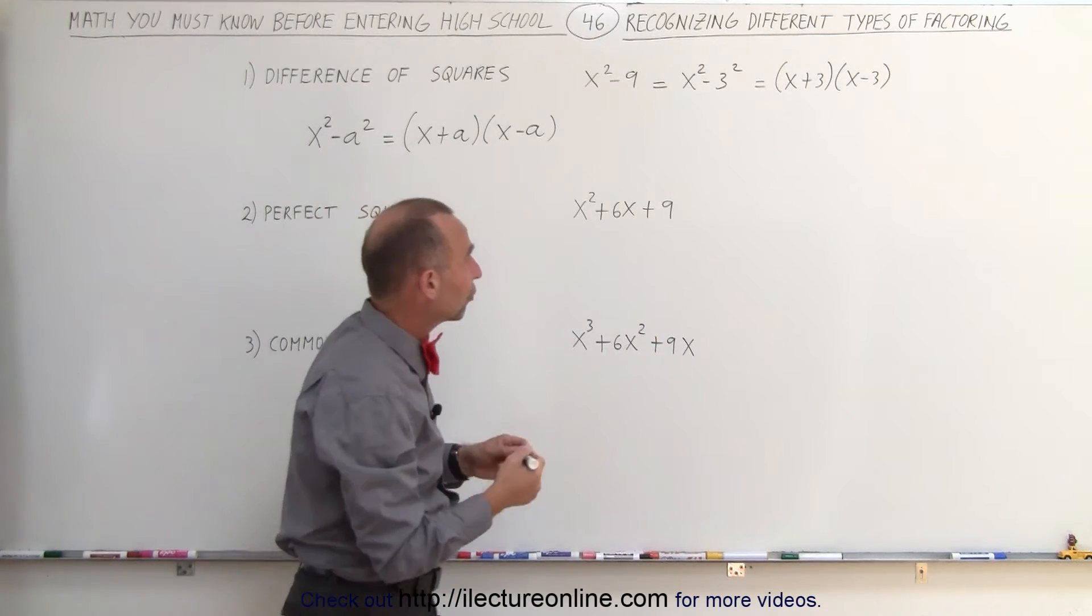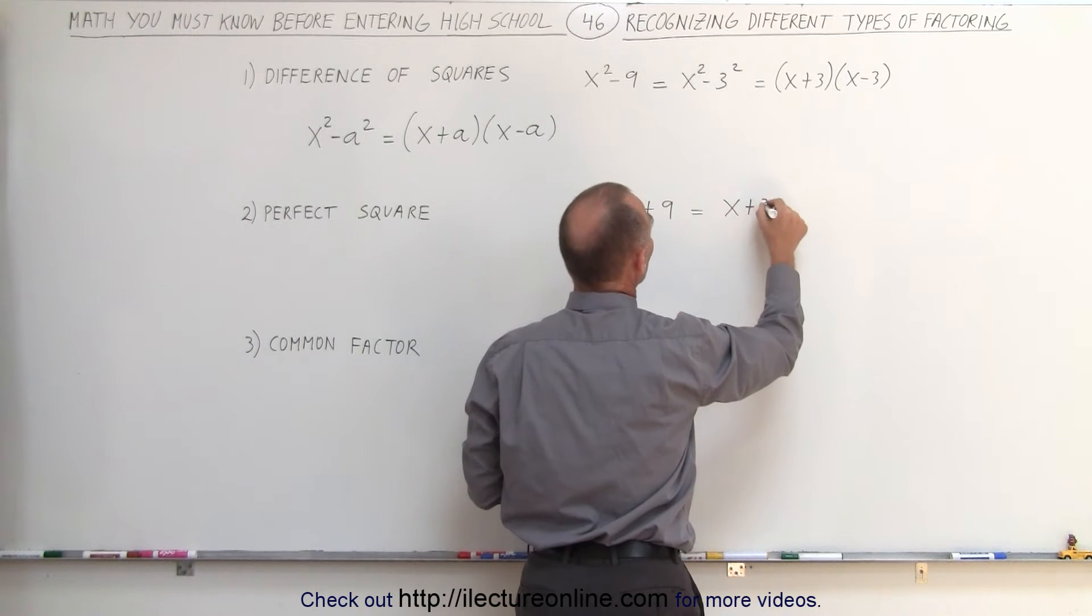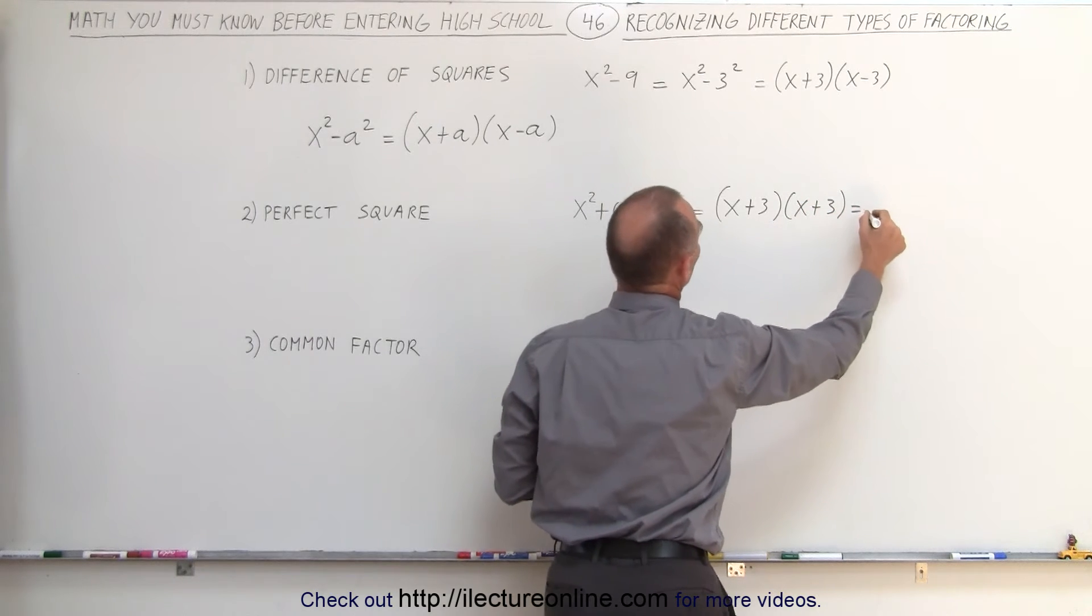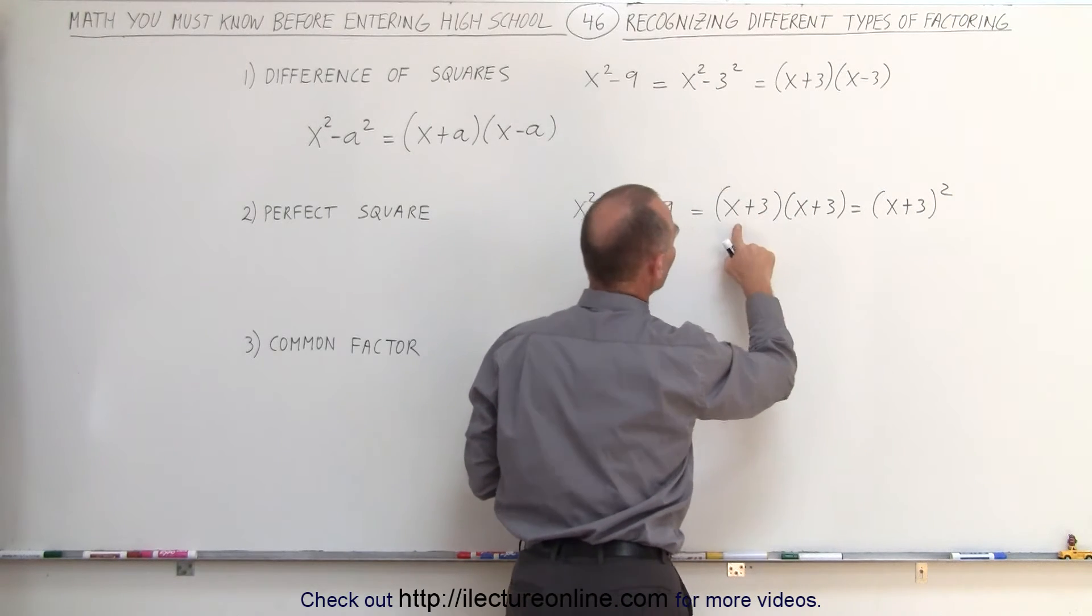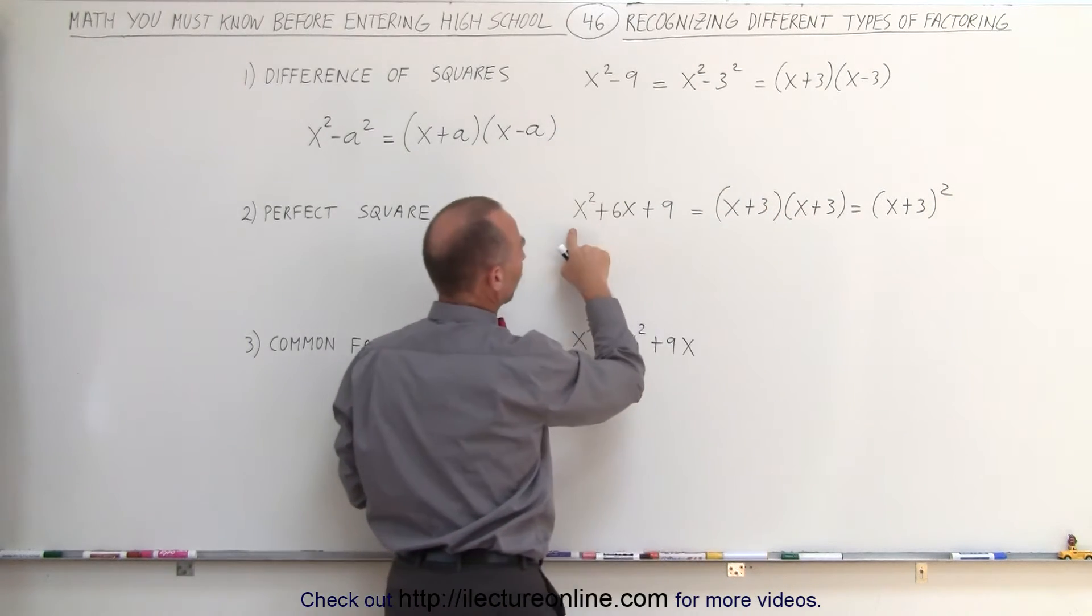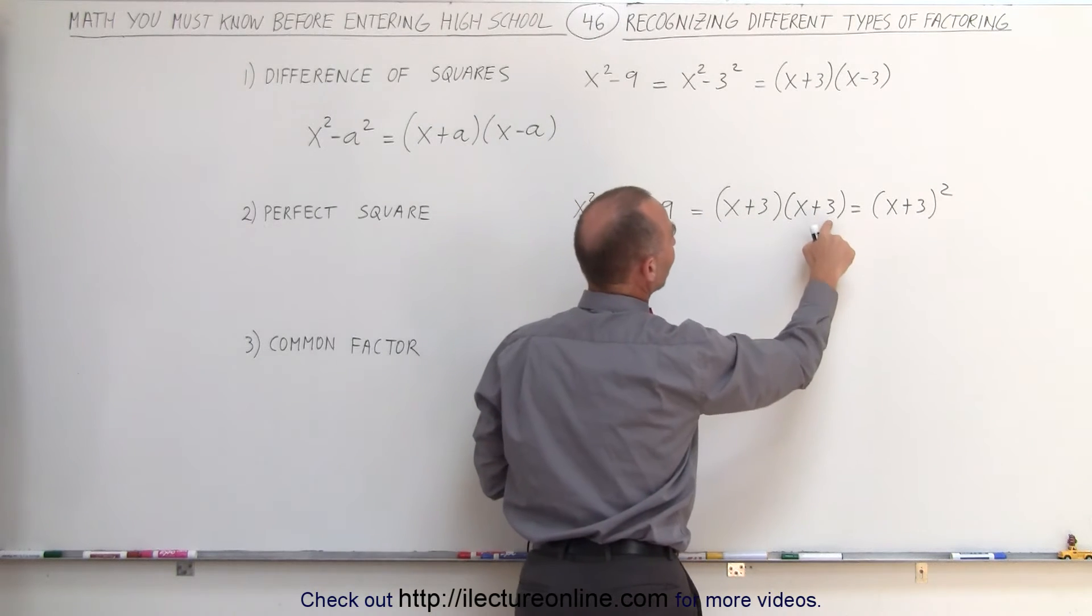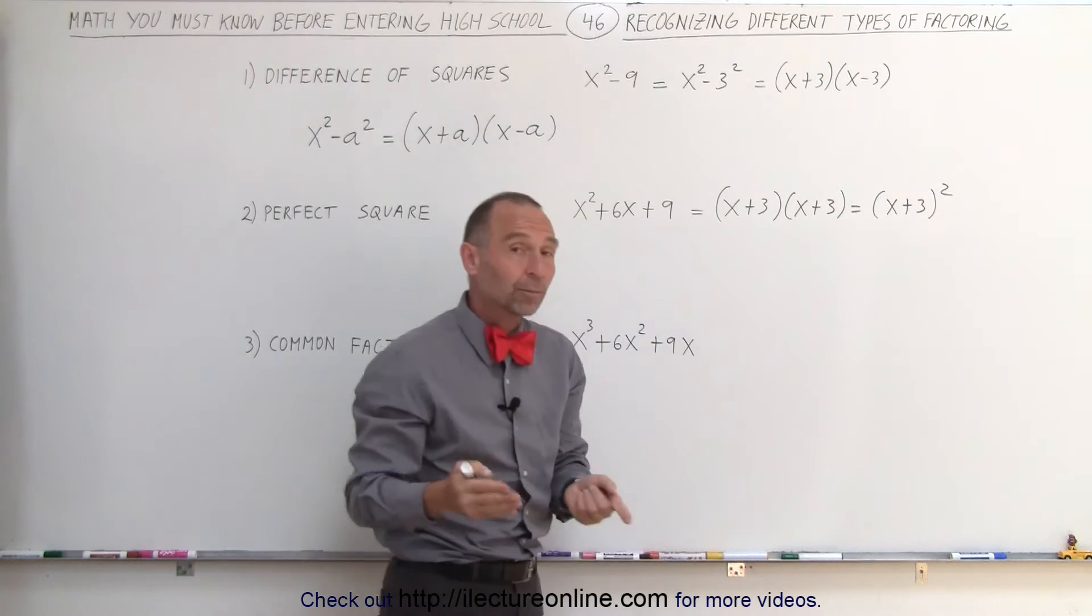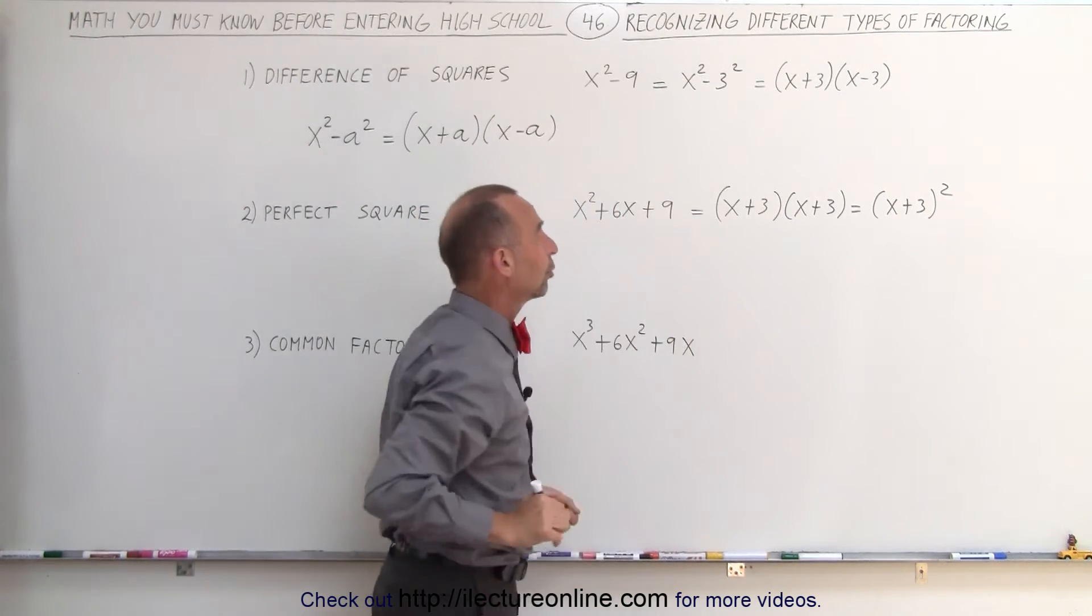If it's a perfect square, then we can write it as the quantity x plus 3 times x plus 3, or simply the quantity x plus 3 squared. When you multiply this together, notice x times x gives you x squared. 3 times 3 gives you 9. And x times 3 gives you 3x. And 3 times x gives you 3x. 3x plus 3x together is 6x. And therefore, we can see that these are equal to one another.